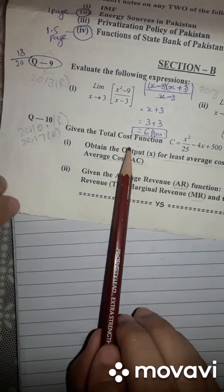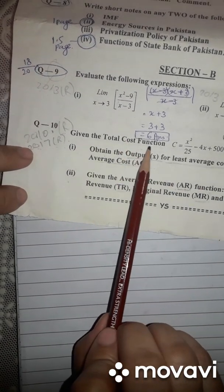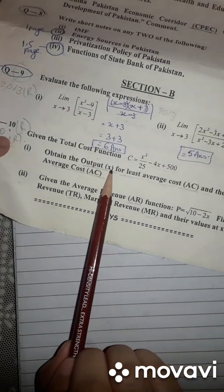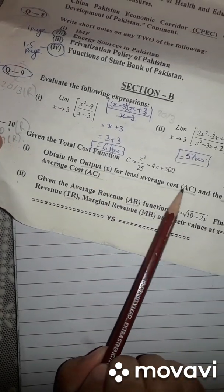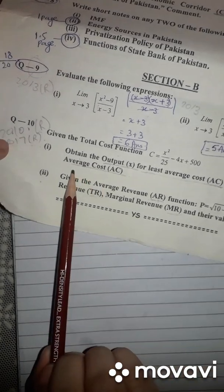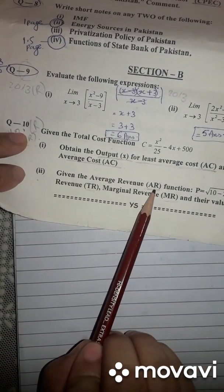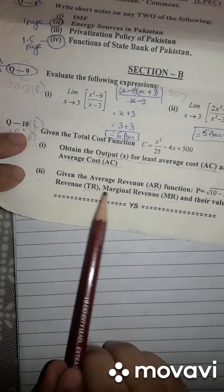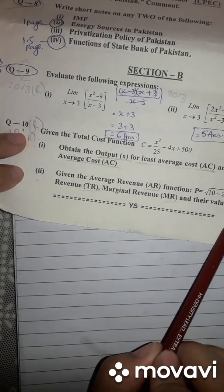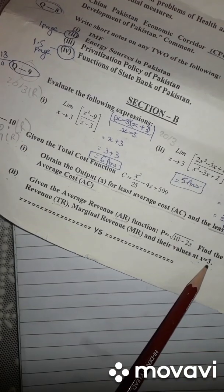So first, you have to find from this total cost function, you have to find least average cost AC and the least value of average cost. And then you have to find from the given AR, find TR and MR at the value of X is equal to 3.